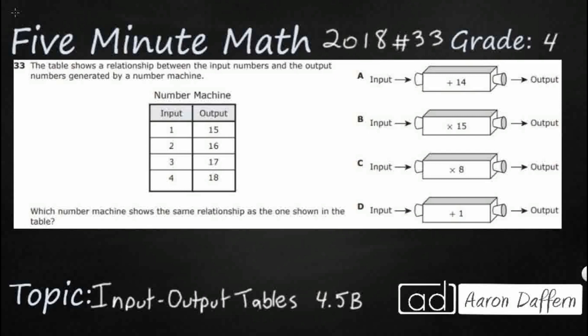We have a table here, and it shows the relationship between our input numbers and our output numbers. It's generated by a number machine, and we need to find a number machine that shows the same relationship between the inputs and outputs in the table. The machine could be A, B, C, or D.